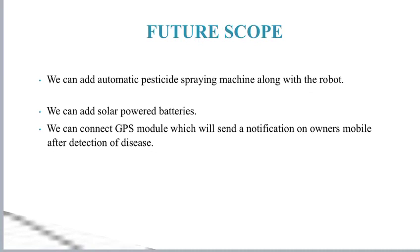Future Scope: We can add an automatic pesticide spraying machine along with the robot. We can add solar-powered batteries. We can connect a GPS module which will send a notification to the owner's mobile after detection of disease.